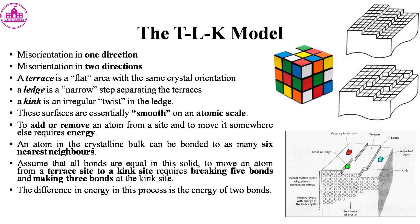To add or remove an atom from a site and move it somewhere else requires energy. An atom in the crystalline bulk can be bonded to as many as six nearest neighbors. To move an atom from a terrace site to a kink site requires breaking five bonds and making three bonds at the kink site. The difference in energy in this process is the energy of two bonds.